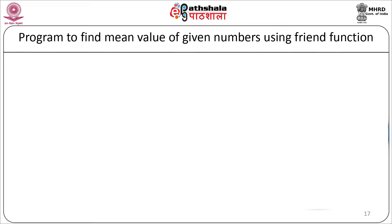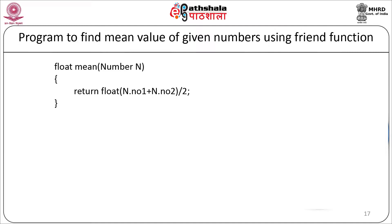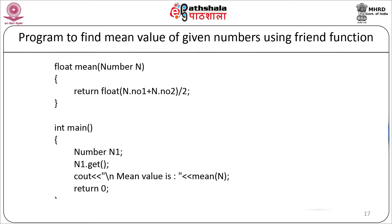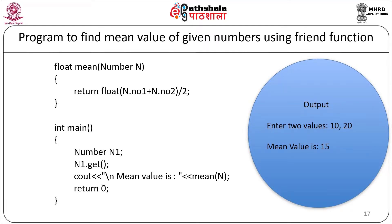In the main program, declare object `number n1`, call `n1.get()`, then display `mean(n1)`. When compiled and executed, it prompts to enter two numbers. If the numbers entered are 10 and 20, it displays the mean value as 15.